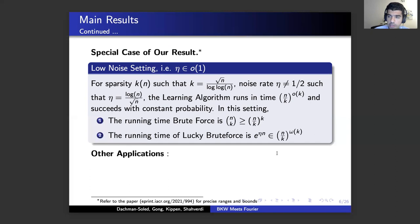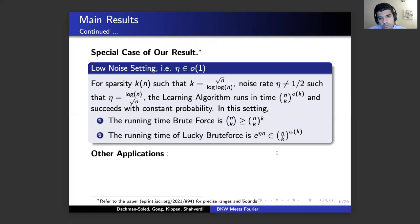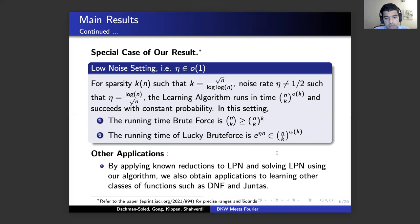For the low noise setting, I'll just discuss the special case — for the full parameter range, please refer to the paper. For sparsity k equal to sqrt(n)/log log n and noise rate eta equal to log n / sqrt(n), the learning algorithm runs in time (n/k)^(o(k)). The runtime of brute force is at least (n/k)^k, and the runtime of lucky brute force is (n/k)^(ω(k)). Again, our learning algorithm is better asymptotically in the exponent. We also show that by applying known reductions to LPN and solving with our algorithm, we obtain applications to learning other function classes such as DNF and juntas.